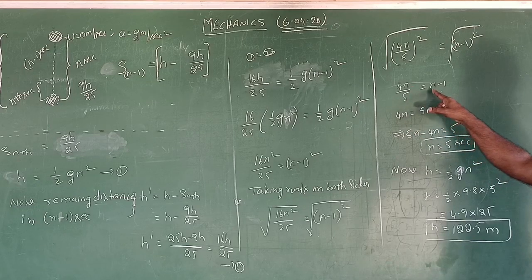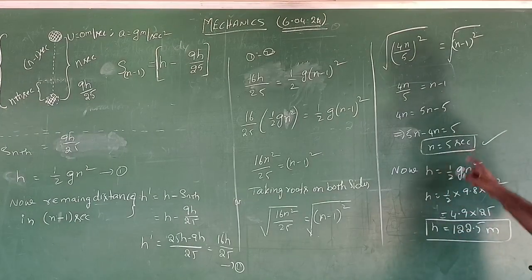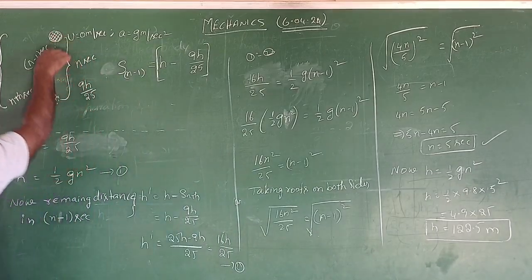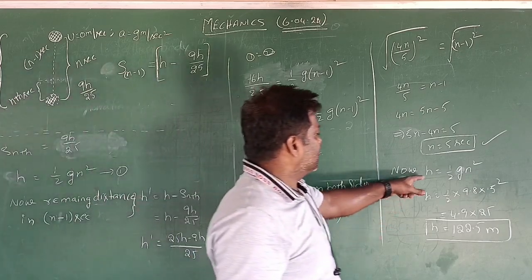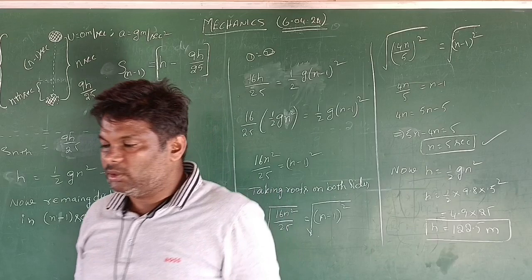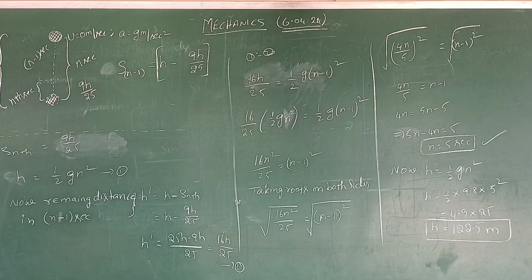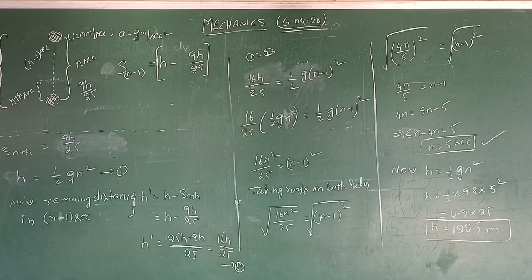From 4n/5 = n − 1, we get 4n = 5n − 5, so n equals 5 seconds. It took 5 seconds to fall. Substituting n equals 5 into h = ½gn² gives h = ½ × 10 × 25 = 122.5 meters. So it falls freely from a height of 122.5 meters. Note it down — remember to write the problem first before writing the solution.